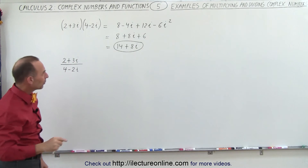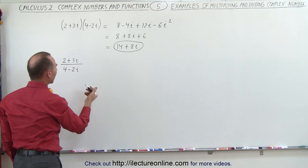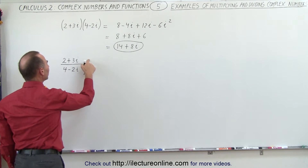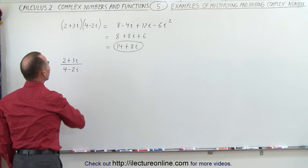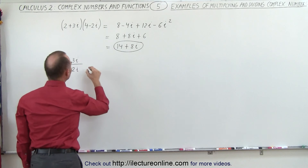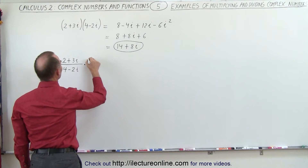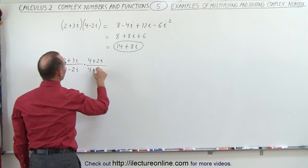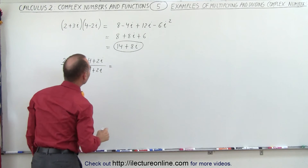Now we're going to divide one by the other. The trick is to multiply both the numerator and the denominator by the conjugate of the denominator. So this will be multiplied by 4 plus 2i in the numerator and 4 plus 2i in the denominator.